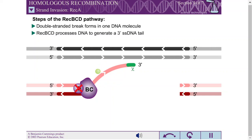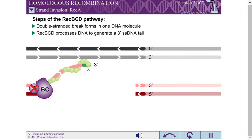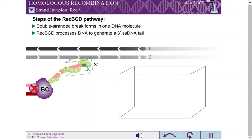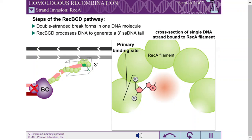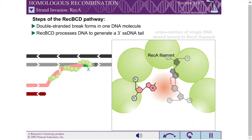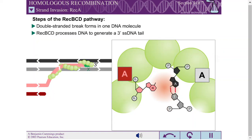REC-BCD helps to direct a protein called REC-A to the single-stranded DNA tail. The active form of REC-A is a protein DNA filament consisting of hundreds of REC-A subunits, with one REC-A for every 3 nucleotides of DNA. The filament has two distinct binding sites: a primary site with the single-stranded DNA molecule, and a secondary site.